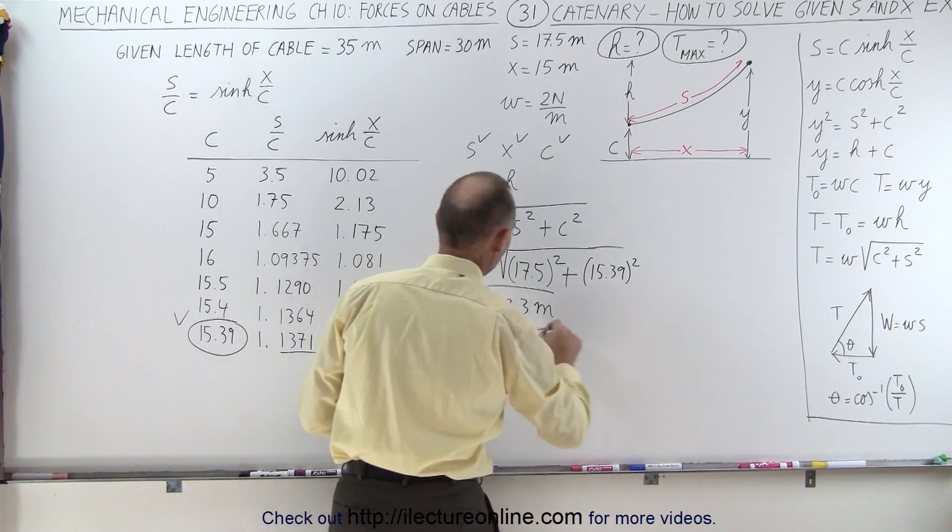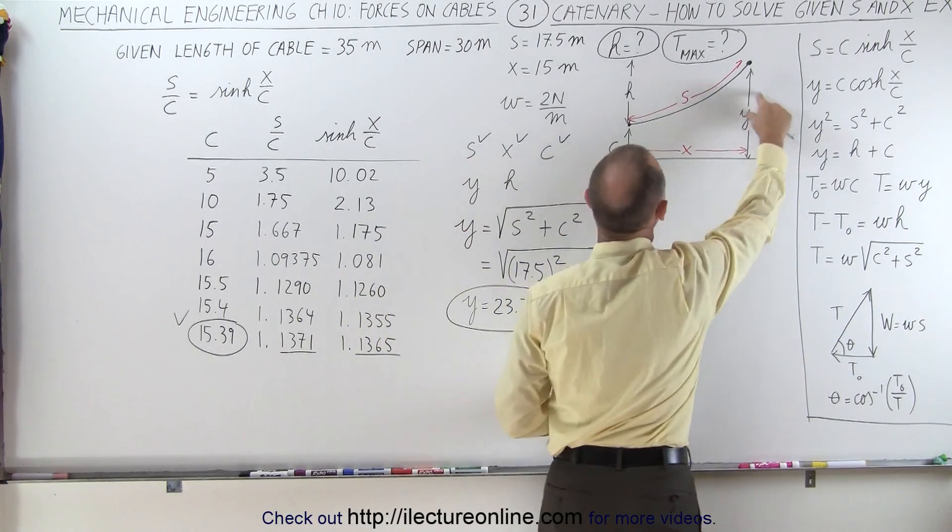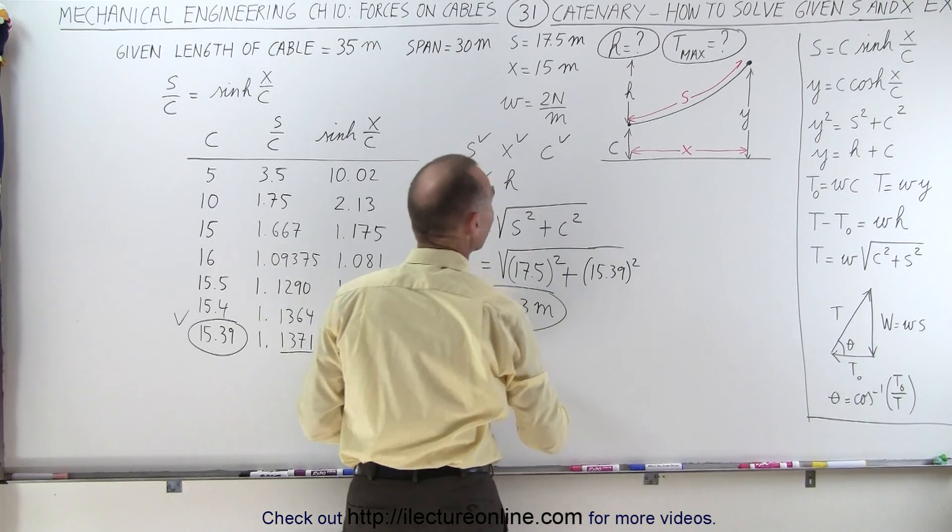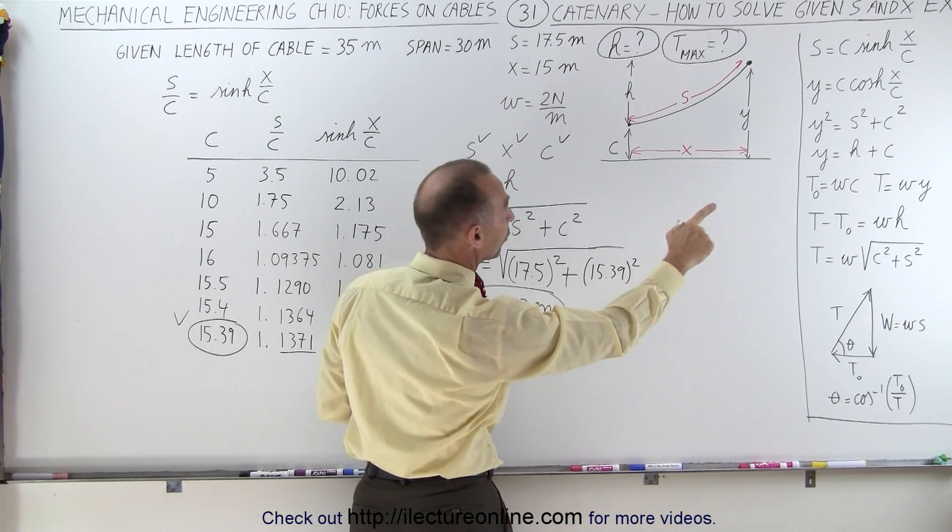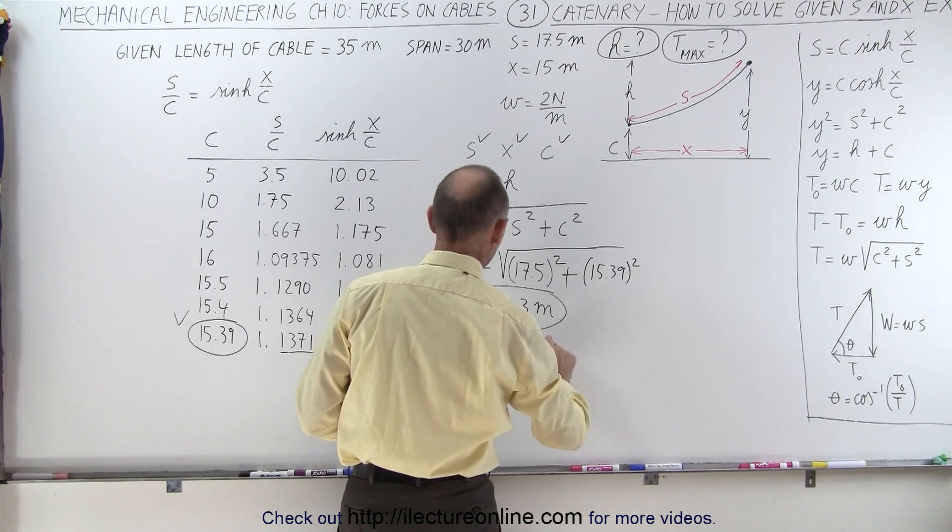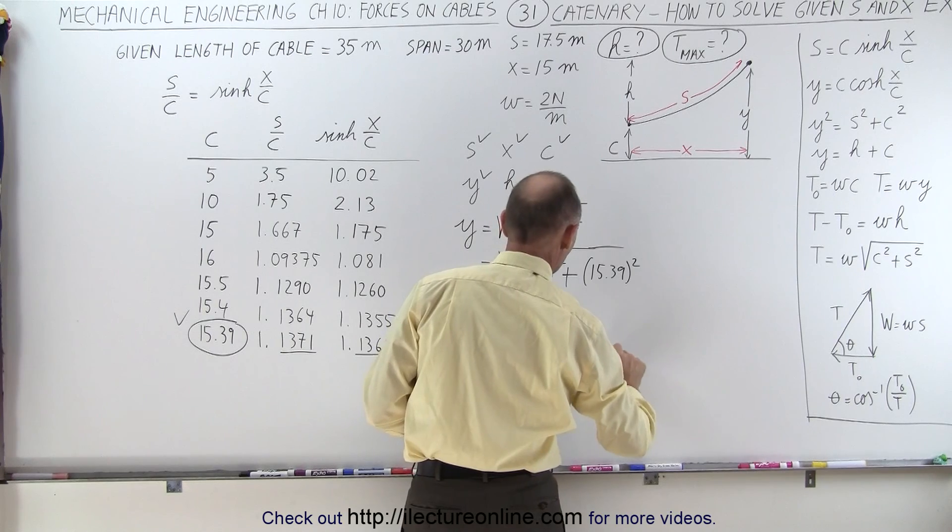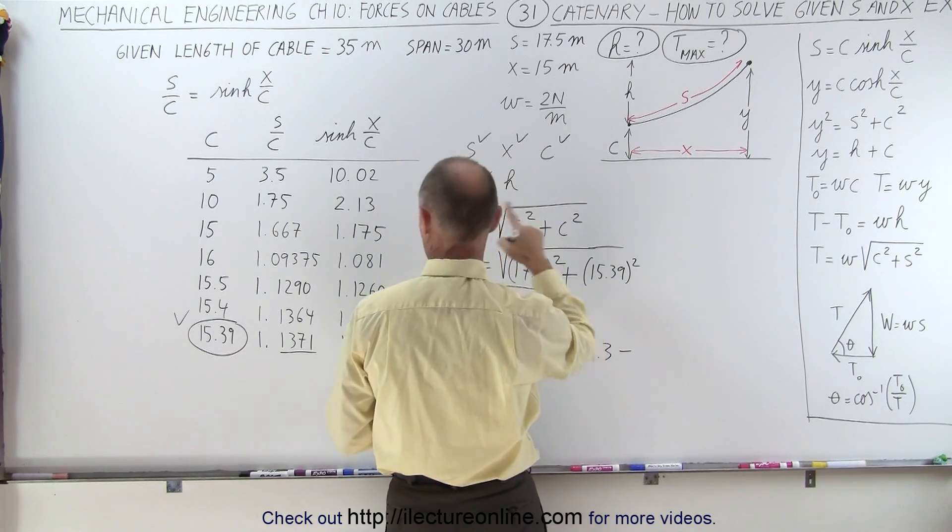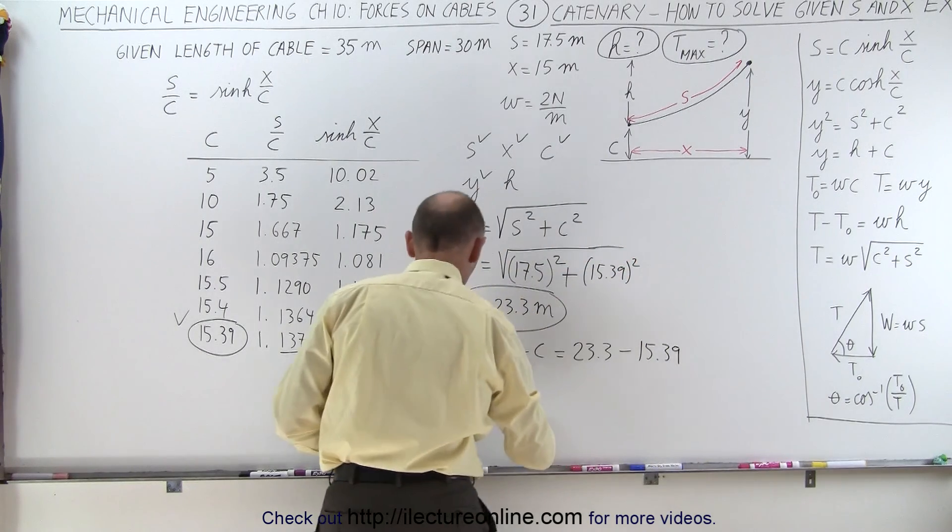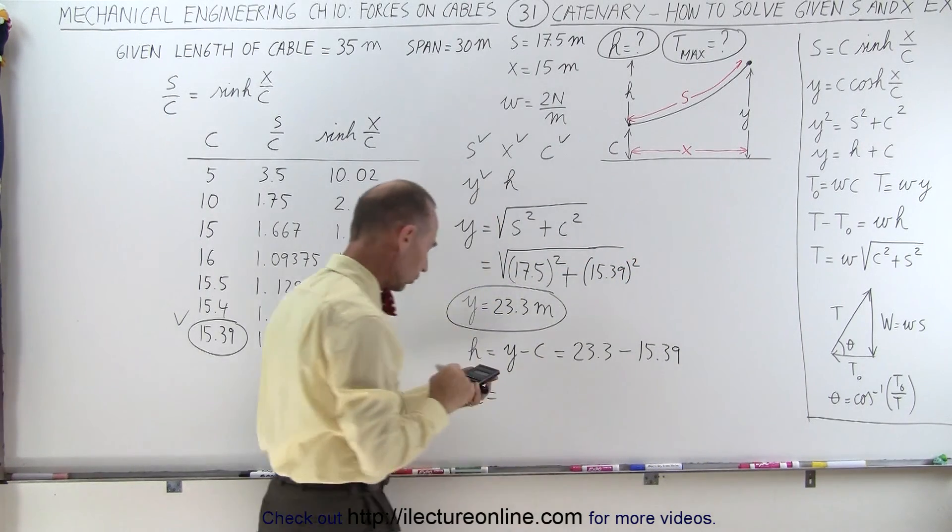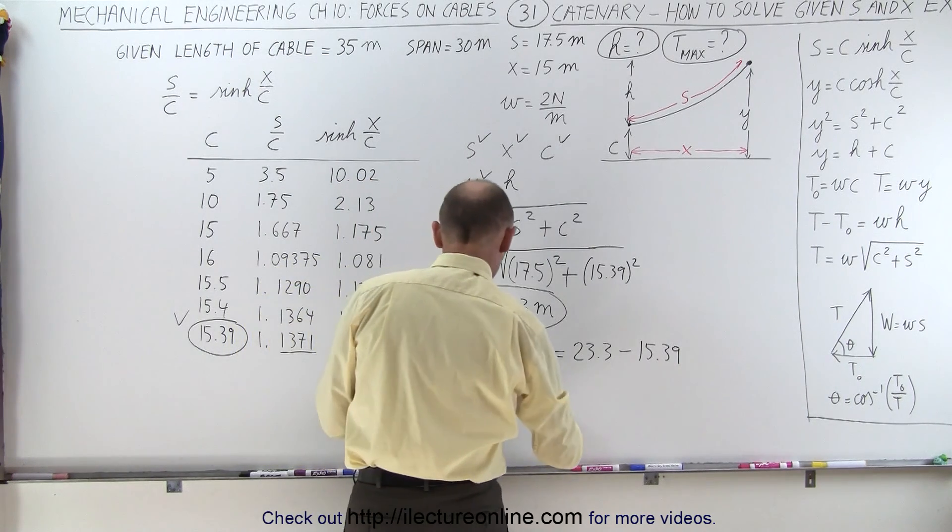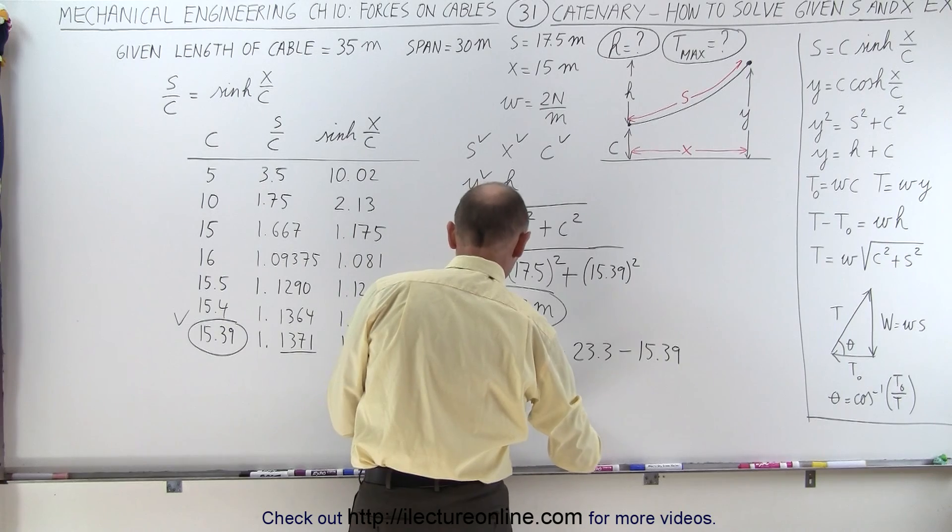Now that we have Y, and notice Y is the sag plus C. We know C, we know Y, so therefore H is going to be Y minus C. So H equals Y minus C, this is 23.3 minus 15.39. So the sag H equals 7.91 meters.